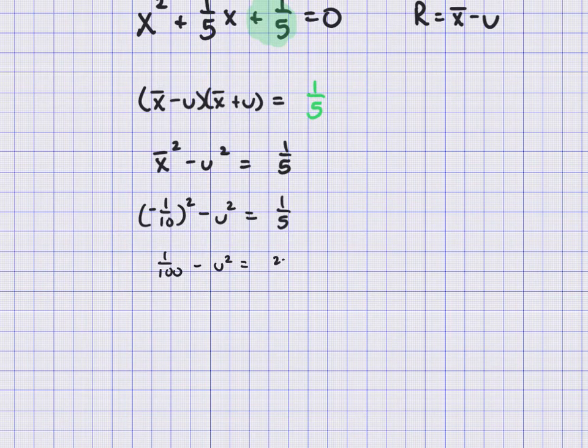When I multiply this by 20, I get 20 over 100, because I'm going to subtract 1 over 100 from both sides. So now I have negative u squared is equal to 19 over 100.